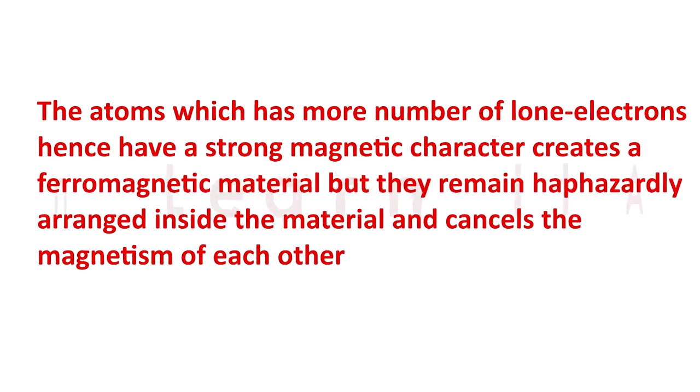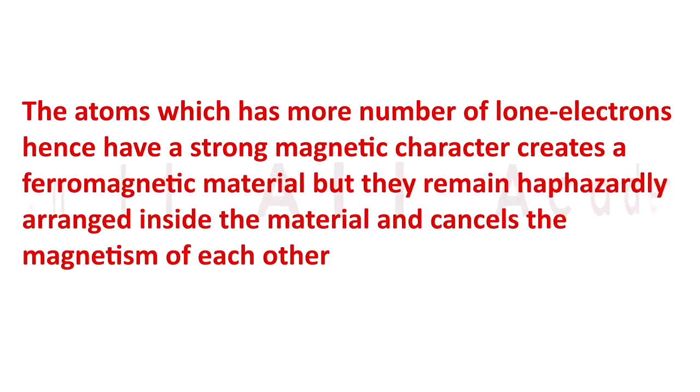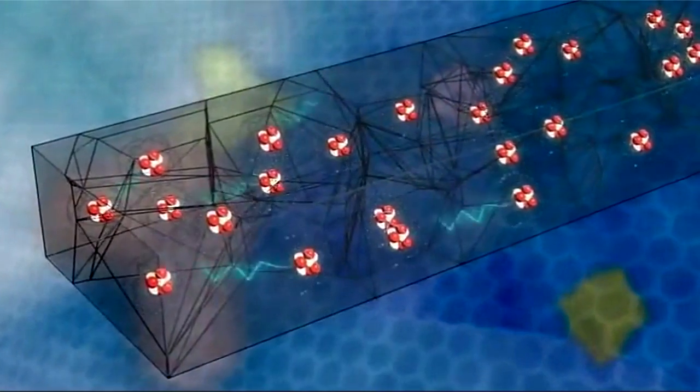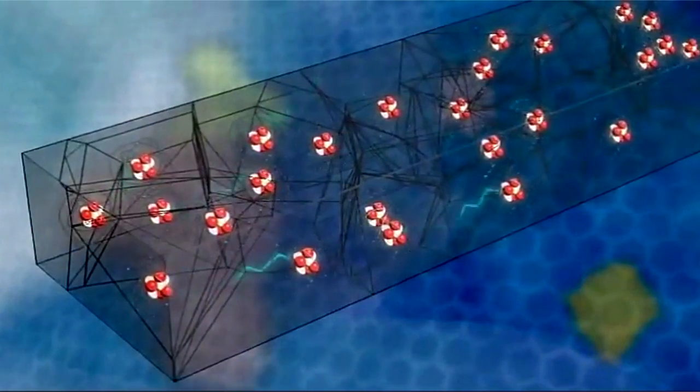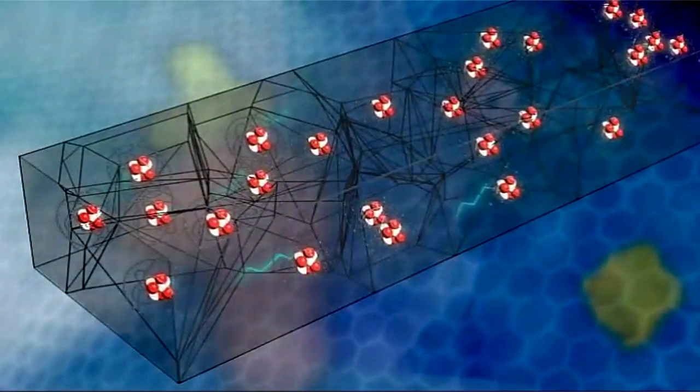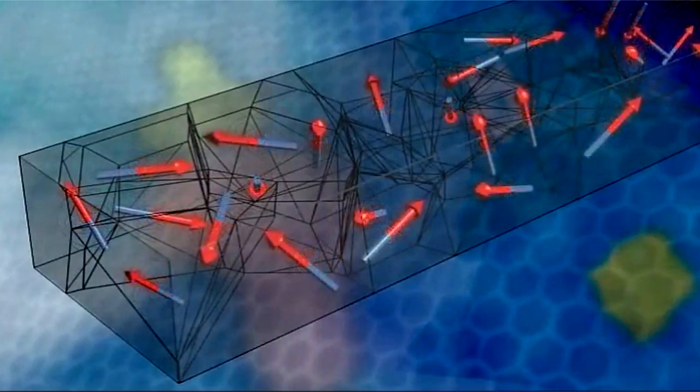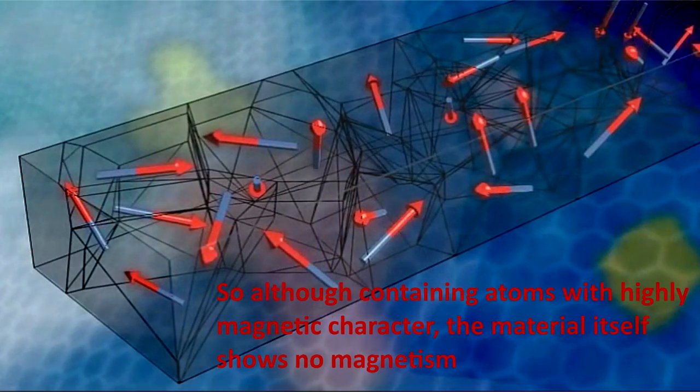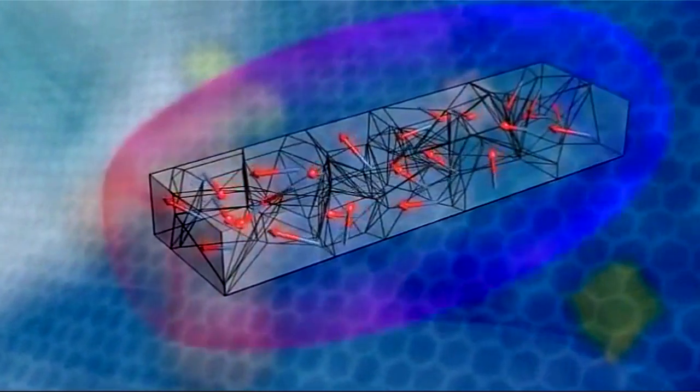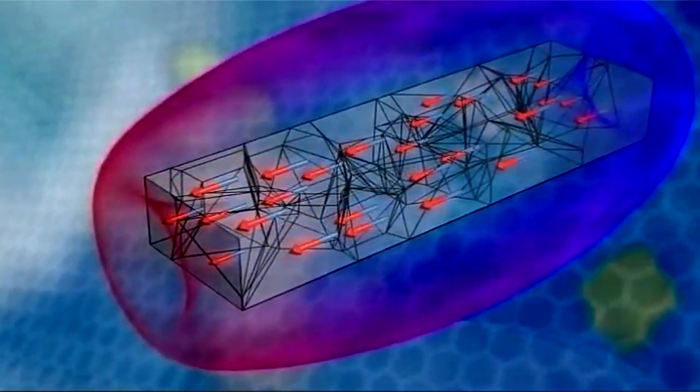Here we should look into another important information. The atoms which have more number of lone electrons, hence have a strong magnetic character, create a ferromagnetic material. But they remain haphazardly arranged inside the material and cancel the magnetism of each other. So although containing atoms with highly magnetic character, the material itself shows no magnetism. But when it comes under a strong magnetic field, the inner atoms arrange themselves into parallel linear chains and start to behave as a magnet.